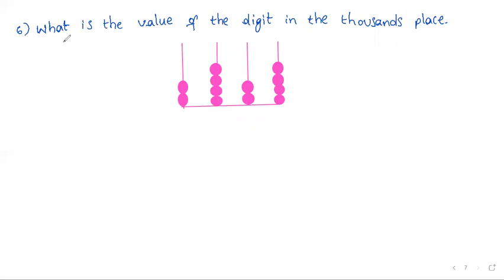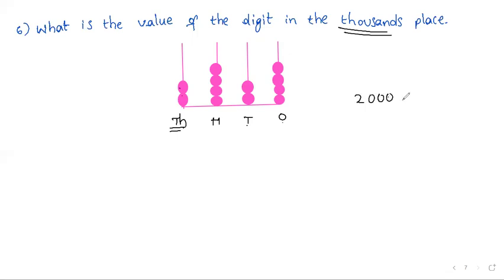Next problem: what is the value of the digit in the thousands place? Ones place, tens place, hundreds place, thousands place — there are two beads in the thousands place, so the value of the thousands place digit is 2000.